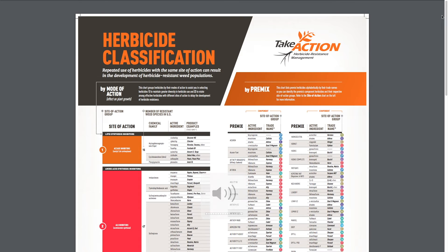Now we have a full copy of the chart up on the screen. On the left side of the chart, we talk about the group numbers and break down what they mean, and have products that each have one site of action or one group number. On the right side of the chart, we have pre-mixes — herbicides on the market that have multiple groups or sites of action present in them.